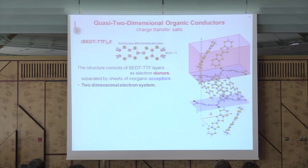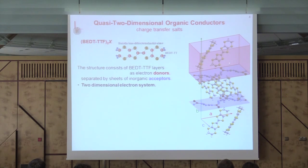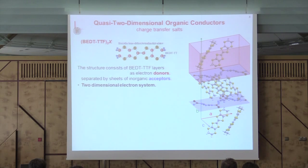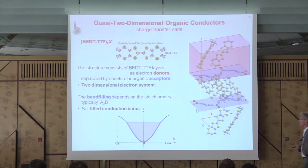The systems have already been introduced. These are two-dimensional organic conductors consisting of organic molecules arranged in layers, with sheets of anions in between. It's a charge transfer system, and most of the action is going on in these organic donors separated by inorganic acceptors. So it's really a model system of a two-dimensional electron gas.